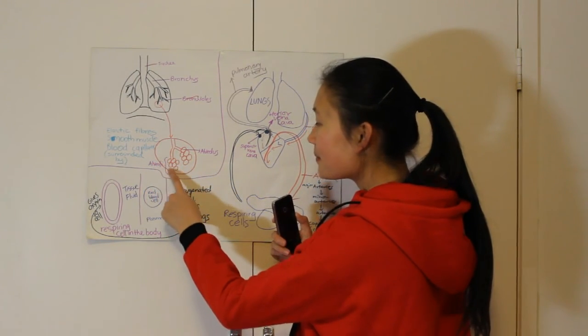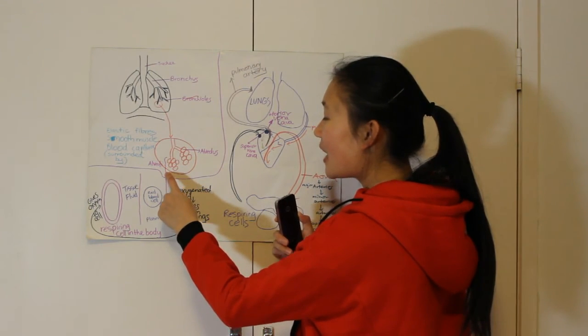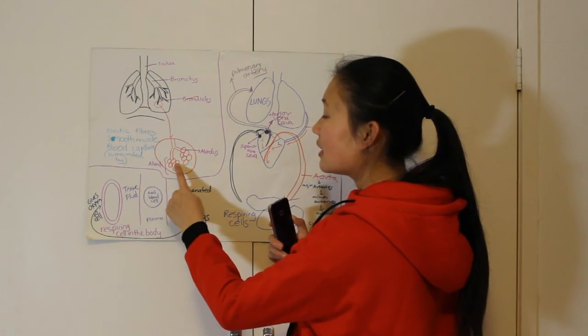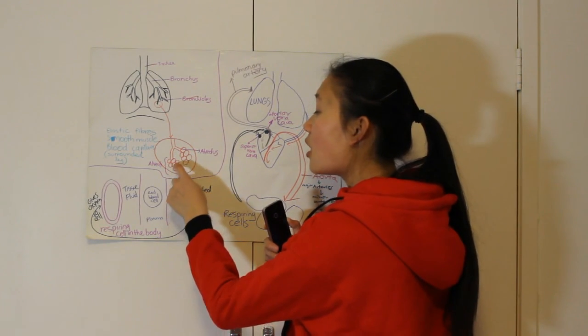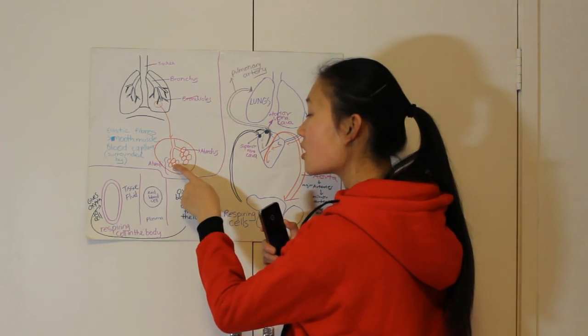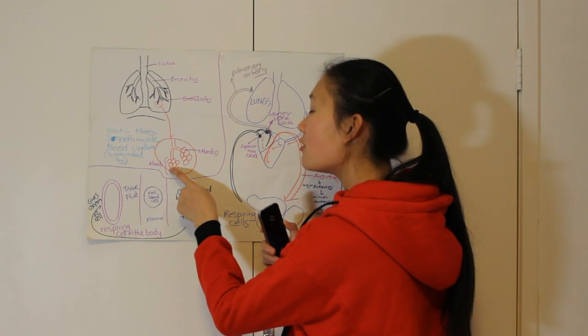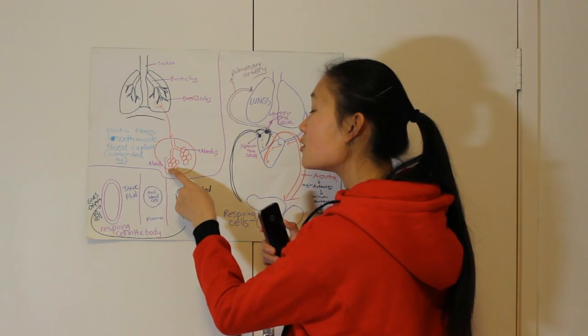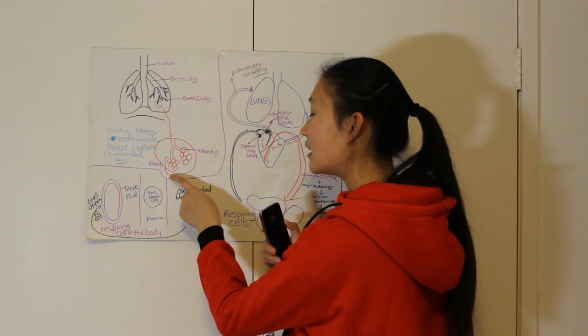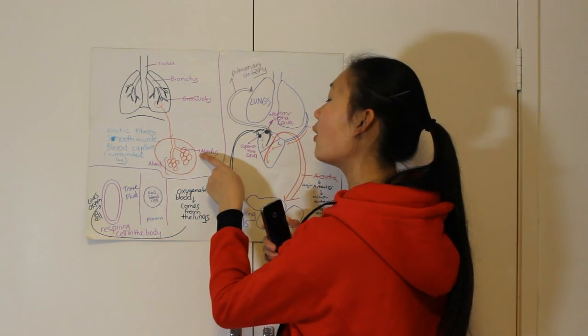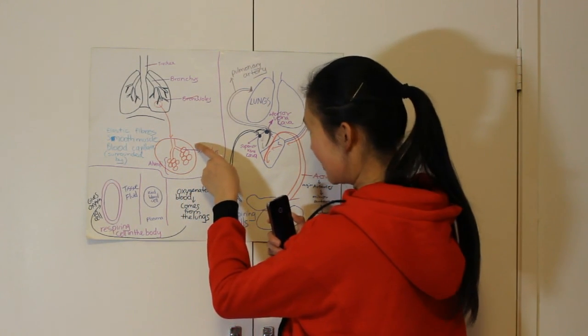At the same time over here, the alveoli which has the oxygen will also diffuse through the wall of the alveoli and diffuse through the wall of the capillary, and then quickly it changes into oxygenated blood now.